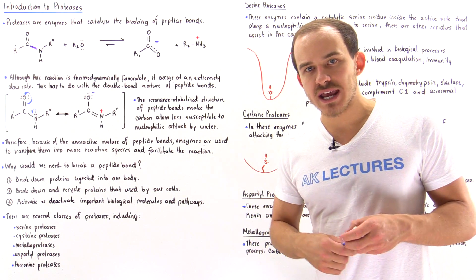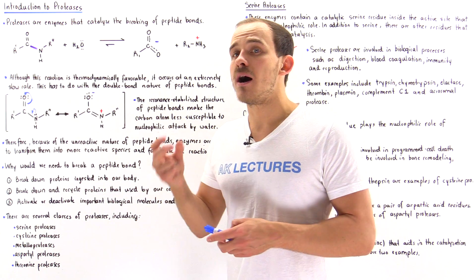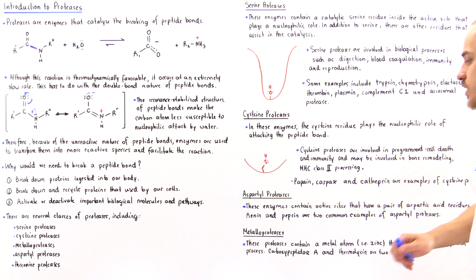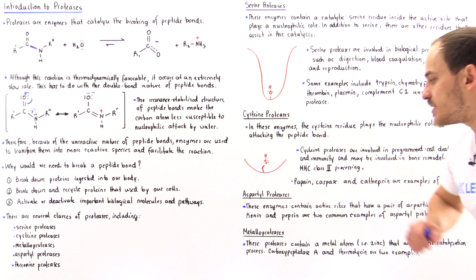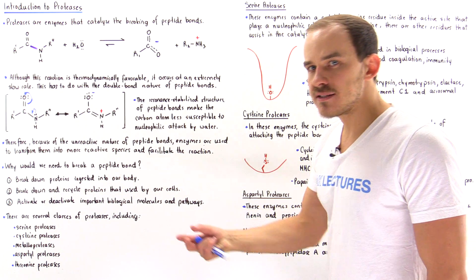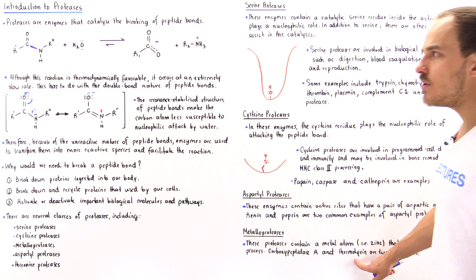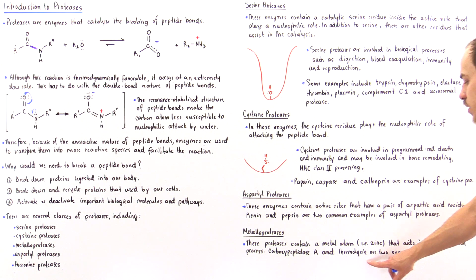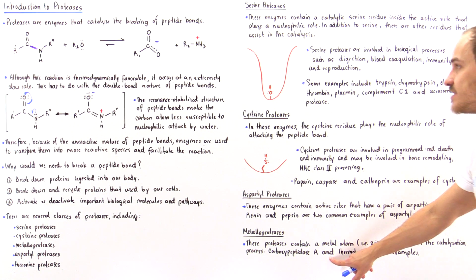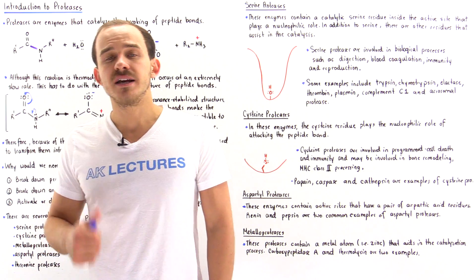Finally, we have metalloproteases — proteases that utilize a metal ion to catalyze the hydrolysis reaction. Two examples are carboxypeptidase A, a digestive enzyme we'll focus on in a future lecture, and thermolysin, a bacterial enzyme not found in our body but used by certain bacterial cells to break down peptide bonds.